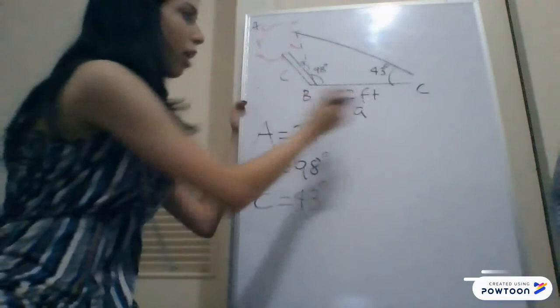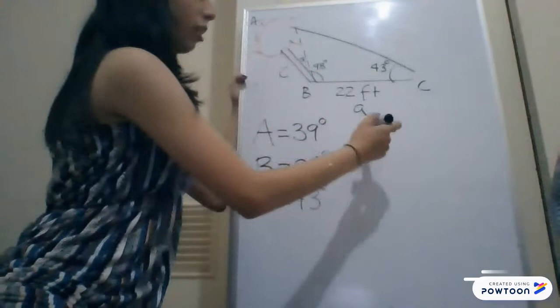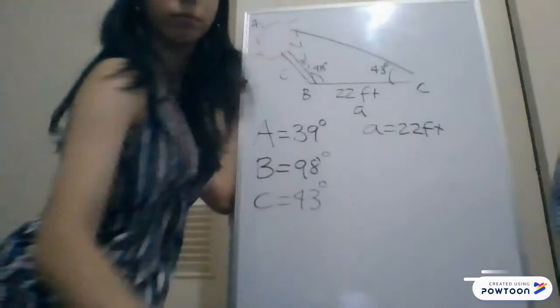And you know that it has a shadow that is 22 feet. So, this is side A. So you know that side A is 22 feet.